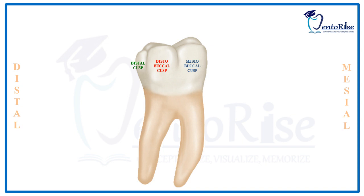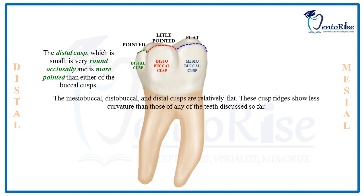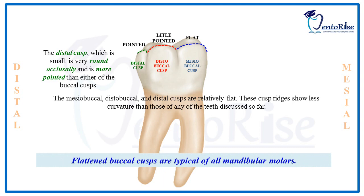Comparing the curvatures of the buccal cusps — the meso-buccal cusp, disto-buccal cusp and the distal cusp — the meso-buccal cusp is relatively flat. The disto-buccal cusp is slightly more pointed than the meso-buccal cusp, and the distal cusp is the most pointed of the three. Overall, the curvatures of all three buccal cusps are relatively less compared to other teeth, meaning these cusps are relatively flat. Flattened buccal cusps are typical of all mandibular molars.